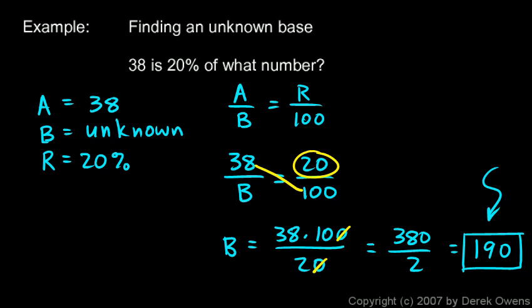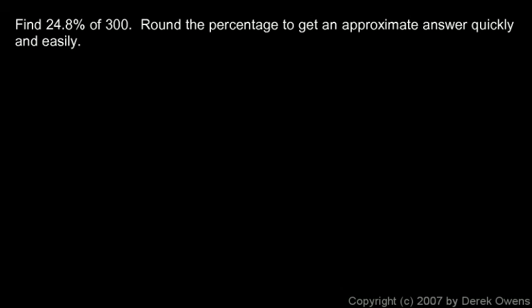I also want to comment on estimating. Sometimes an estimate is sufficient and can be found very quickly. For example: find 24.8% of 300 — round the percentage for an approximate answer quickly and easily. Since 24.8 is really close to 25, we can just find 25% of 300 instead.